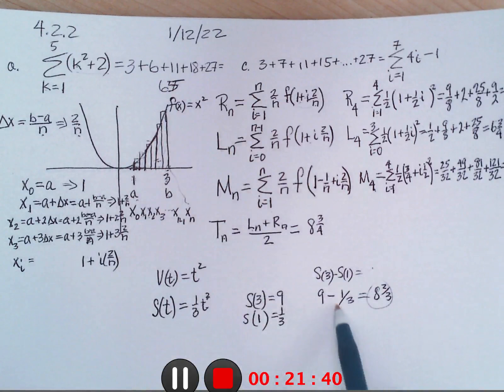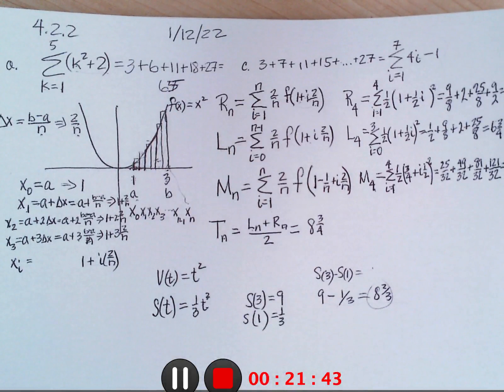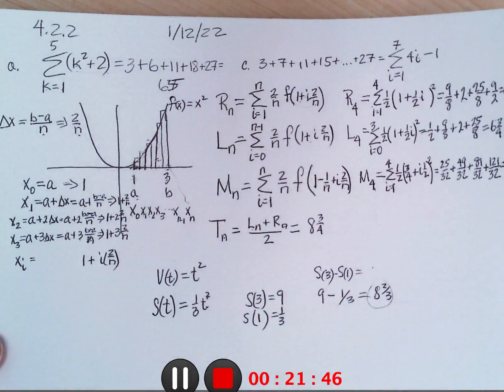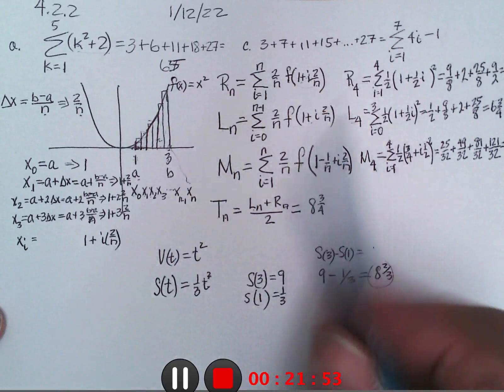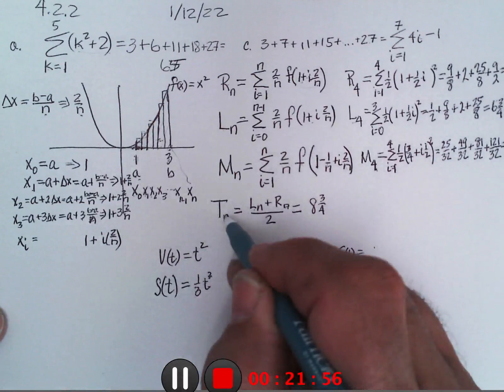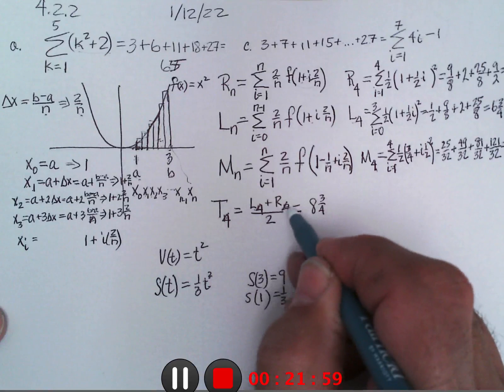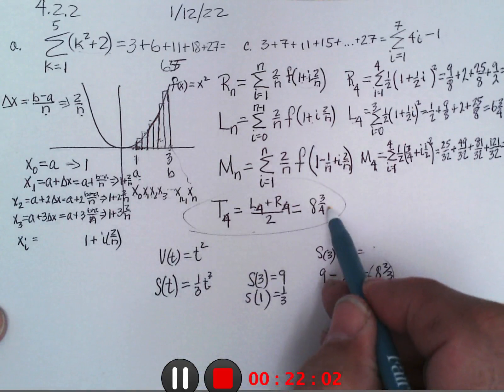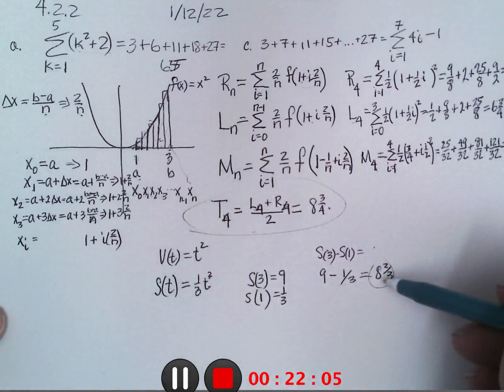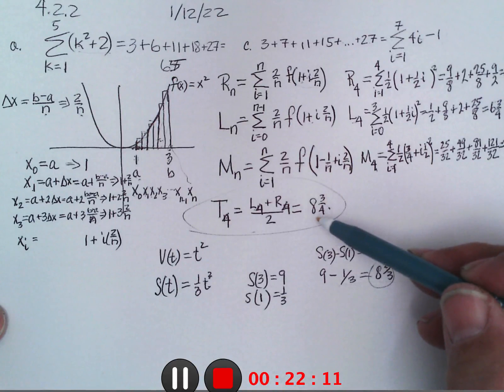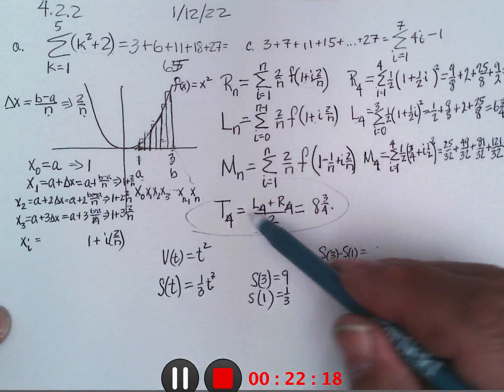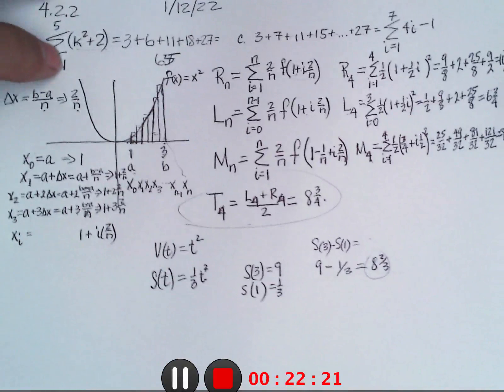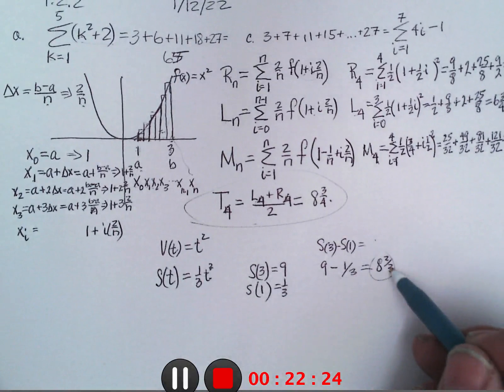And that tends to be the easier way to do it than doing all these sums. Now we calculated with 4 sections, and this would have been T of 4. I guess I did it with 4 here. So this would be T of 4, 8 and 3 quarters. And the answer is 8 and 2 thirds, which is halfway between these two, halfway between the midpoint and trapezoidal, somewhere in between them.